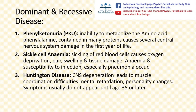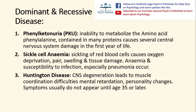The first is Phenylketonuria, or PKU, a recessive type disorder meaning the alleles from both parents carry the condition. It is characterized by an inability to metabolize the amino acid phenylalanine contained in many proteins, which causes central nervous system damage in the first year of life. The second is sickle cell anemia, another recessive disease where the sickling of red blood cells causes oxygen deprivation, pain, swelling, and tissue damage.